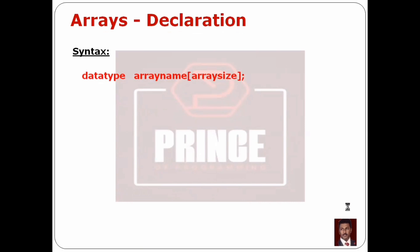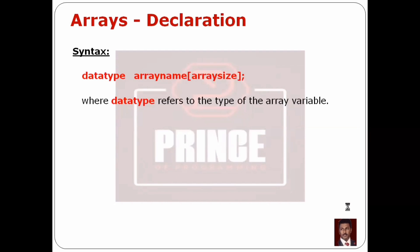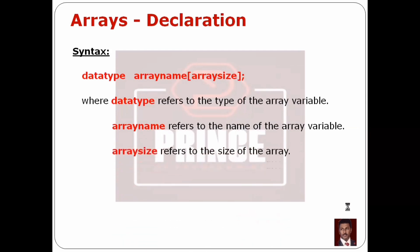When we declare an array, we specify a data type, which refers to the type of the array variable. Then we provide an array name, which is a user-defined name. Then we specify the array size in square brackets, which represents the number of elements in the array.